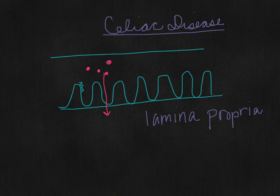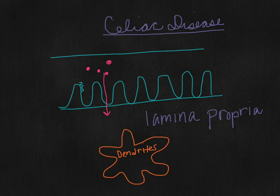Once it gets down to this layer, some of it will be simply digested by dendritic cells. These dendrites are members of the innate immune system. Some of the gluten will be digested by these dendrites.